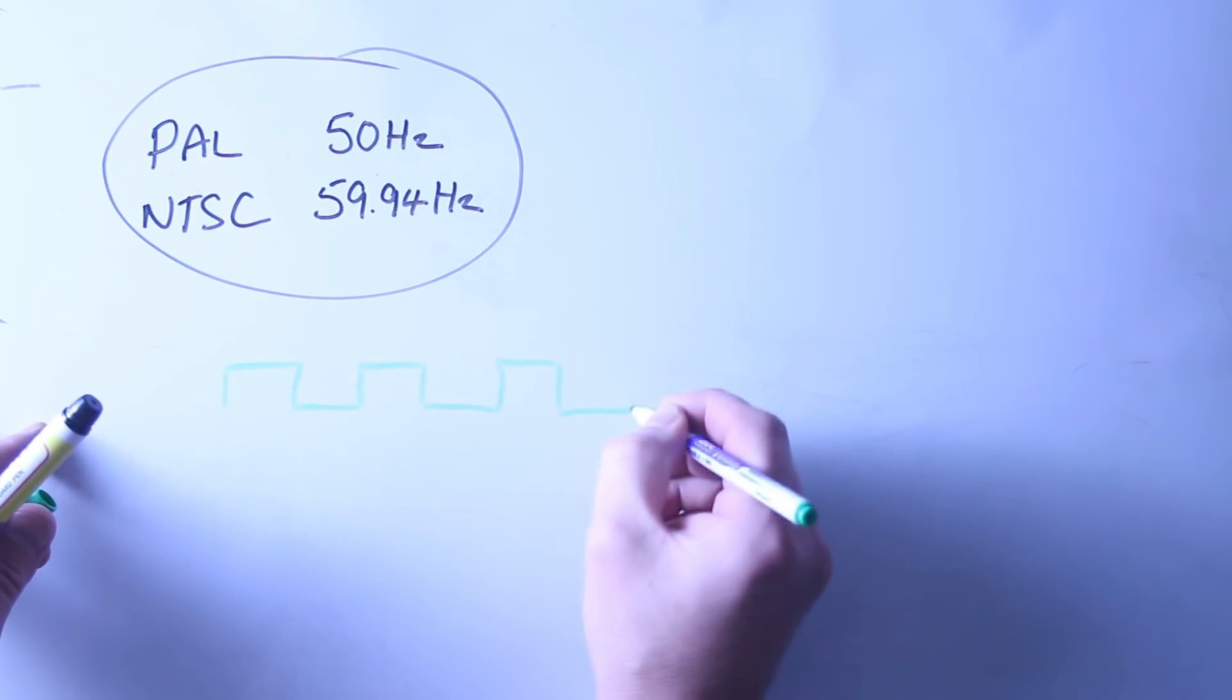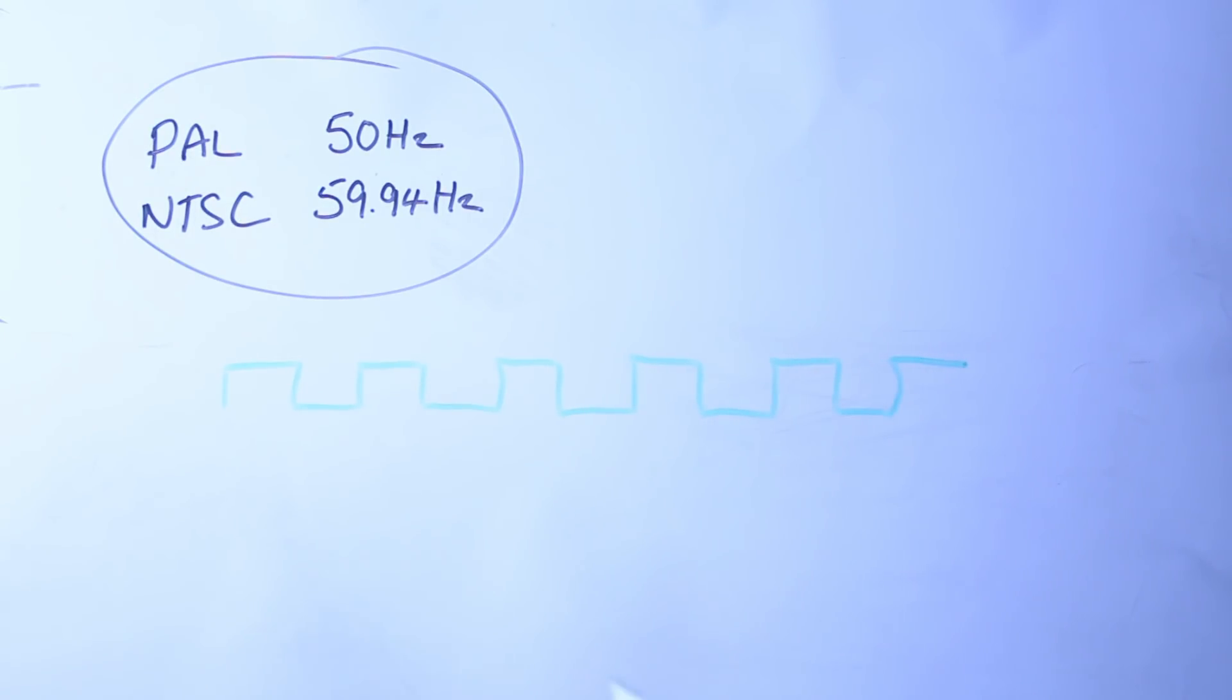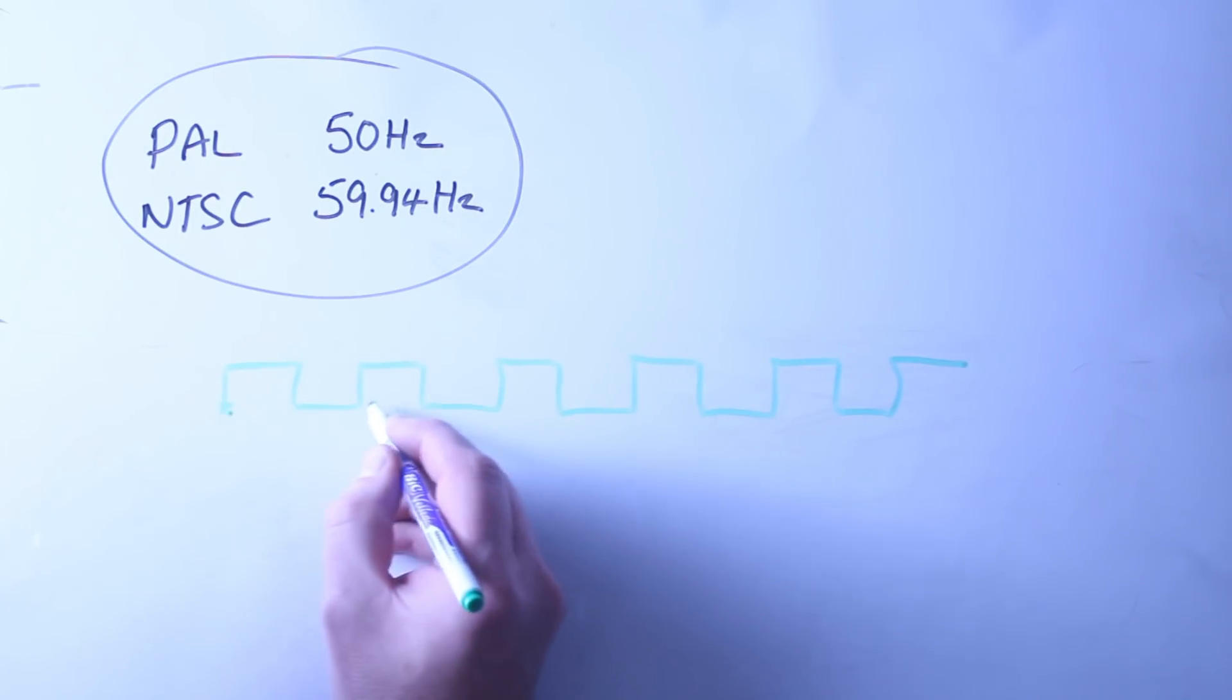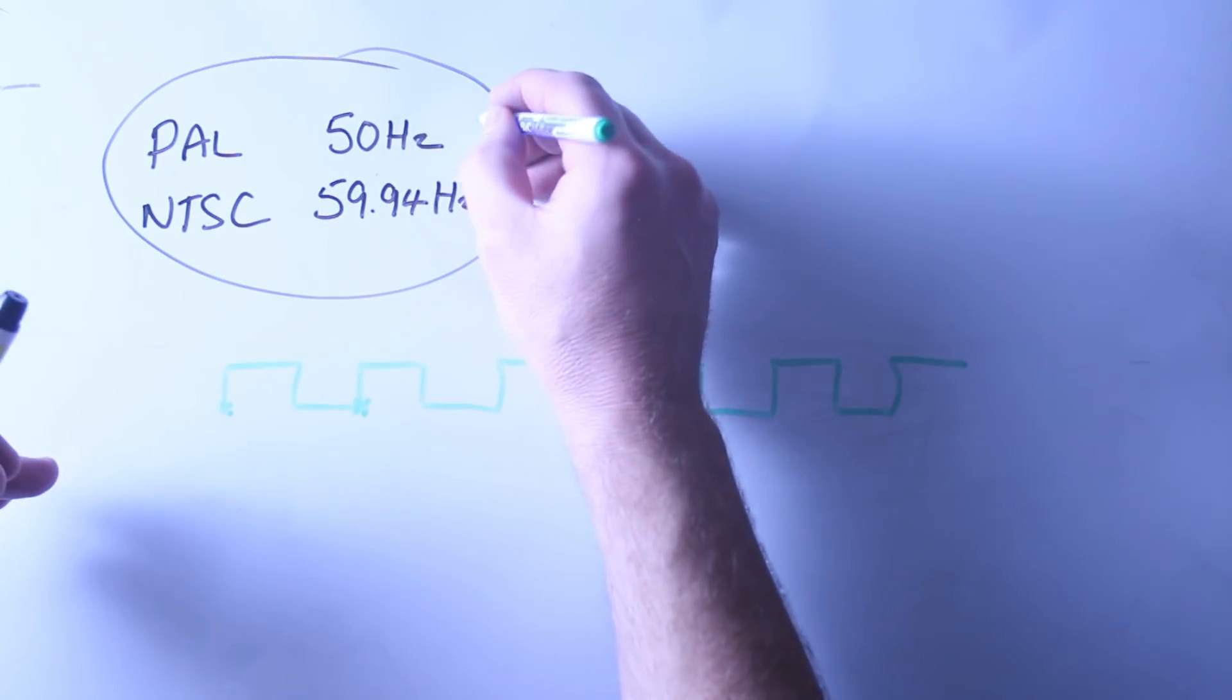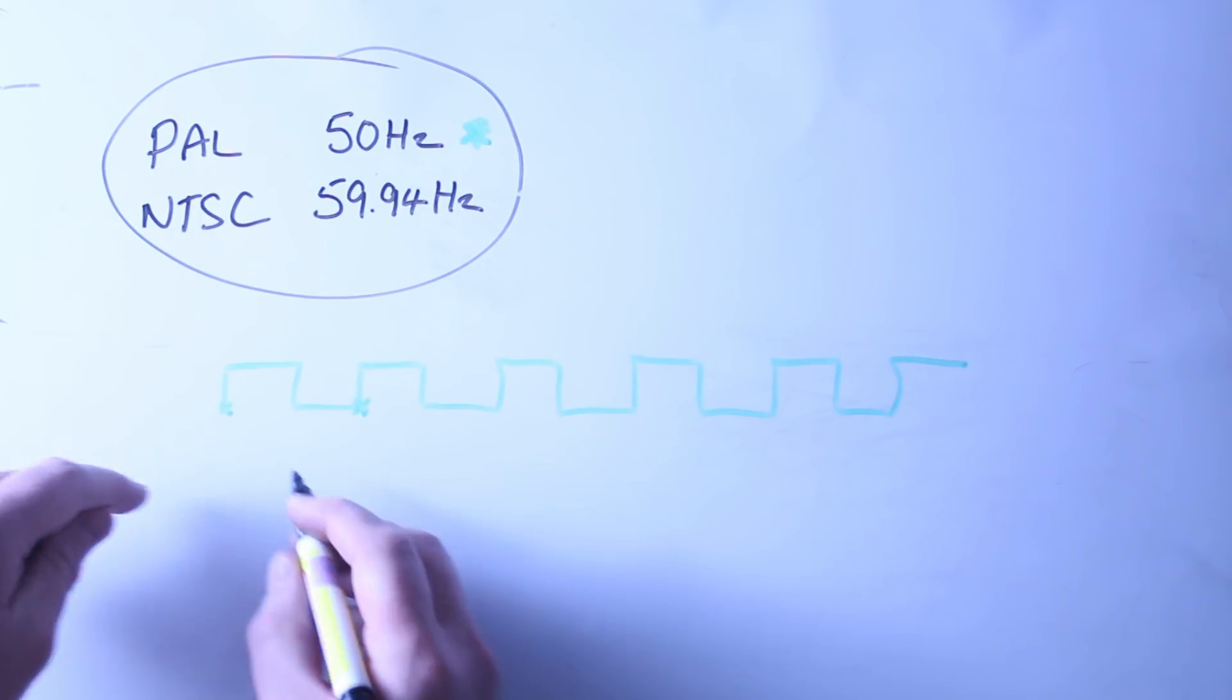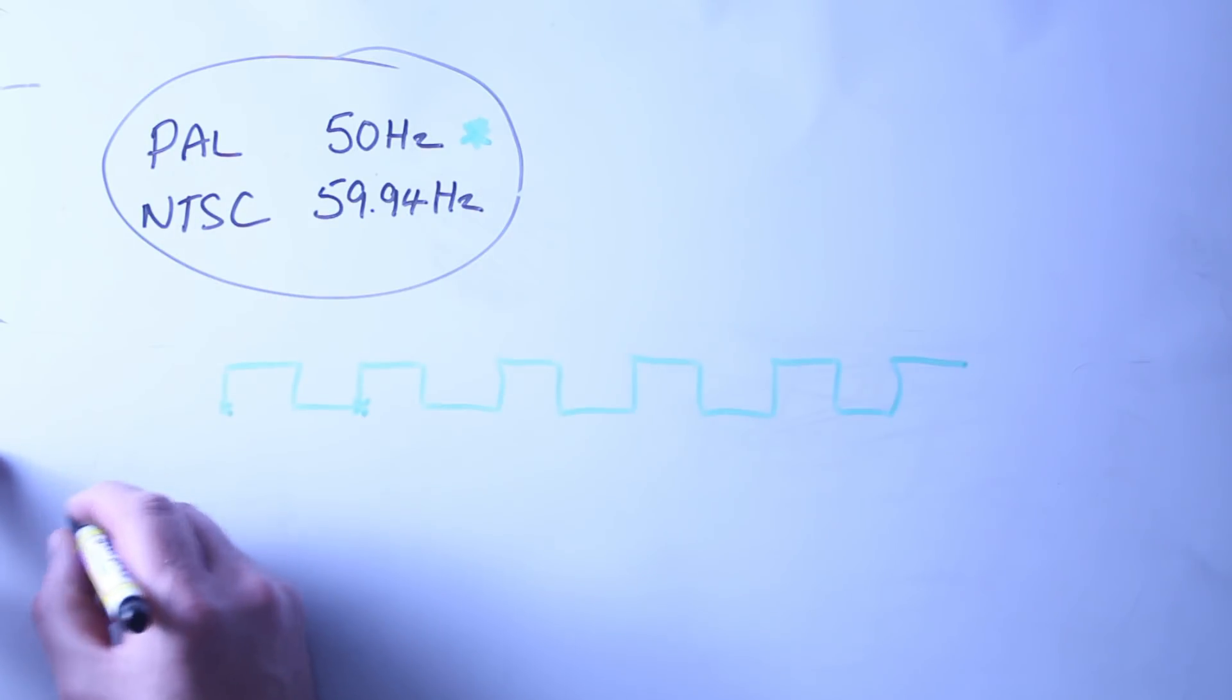This dictates a number of things. Primarily it sets the camera frequency to 50 Hz for PAL and 59.94 Hz for NTSC. This figure here is the key to everything. This is your clock frequency.